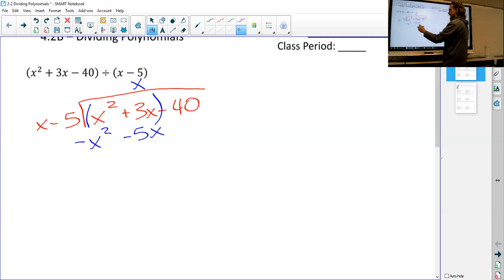Be careful when you subtract here. X squared minus x squared cancels out—that's important, that's the whole reason why we do this. We want these terms to cancel out one by one. Then I have 3 minus negative 5x, so 3 minus negative 5 is the same as 3 plus 5, so this becomes 8x.